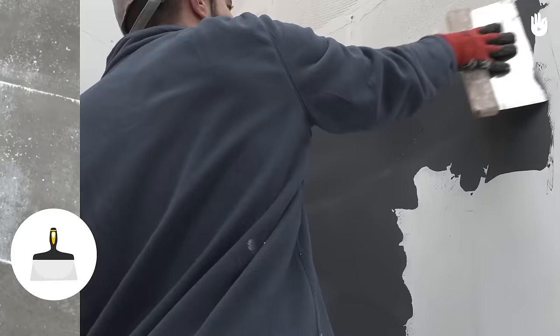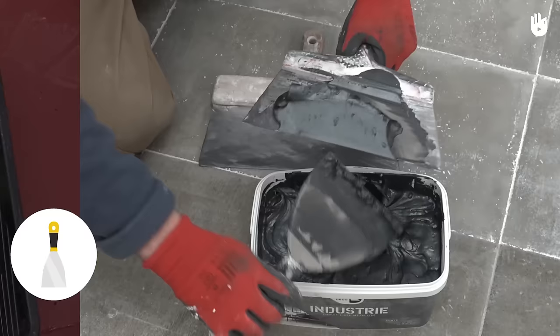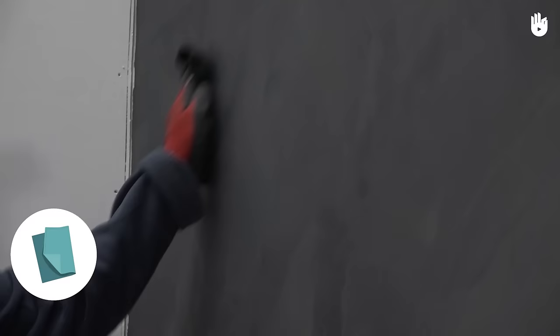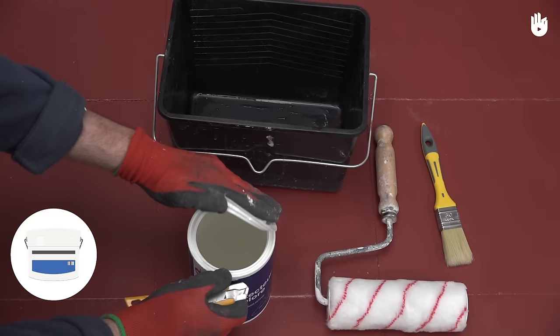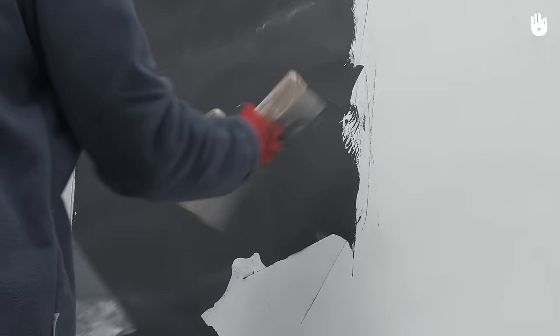To apply this decorative plaster you will need a bucket, a spatula, two coating knives, a flat paintbrush, a short head roller, a broom, a cloth, decorative plaster and decorative varnish.